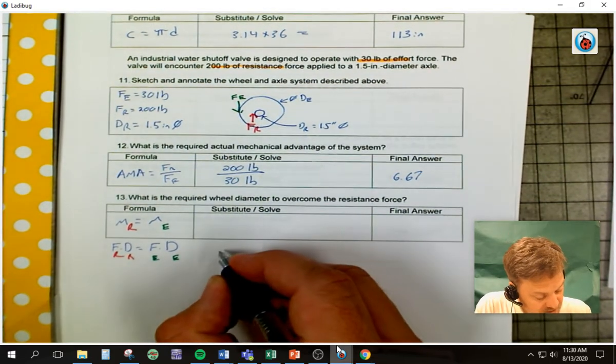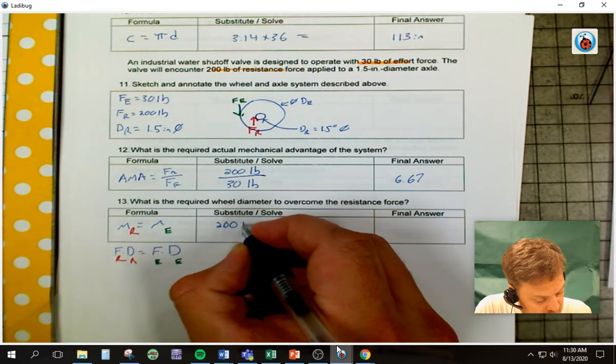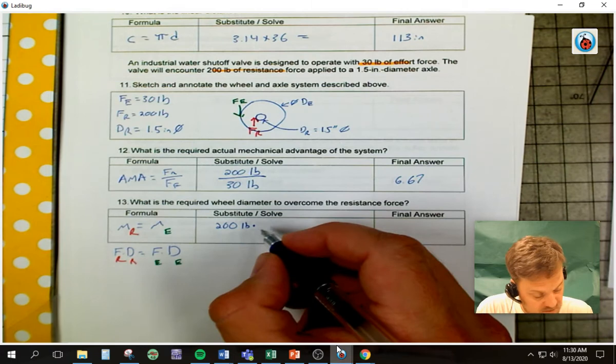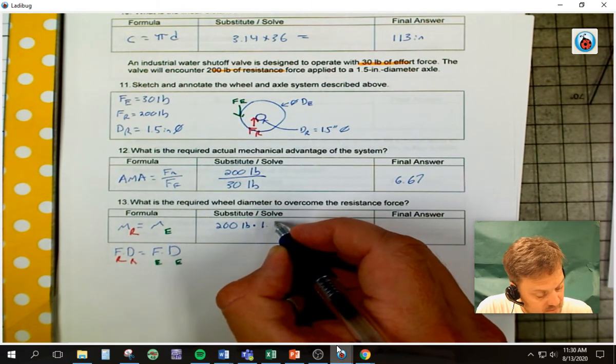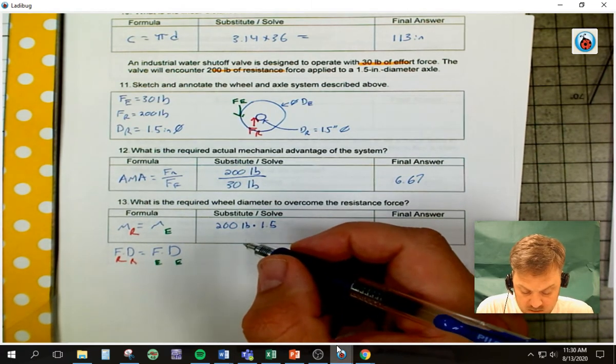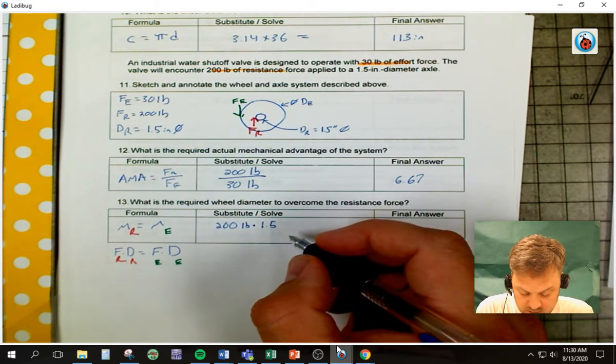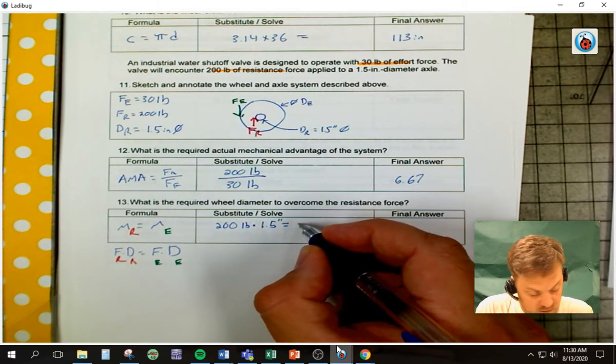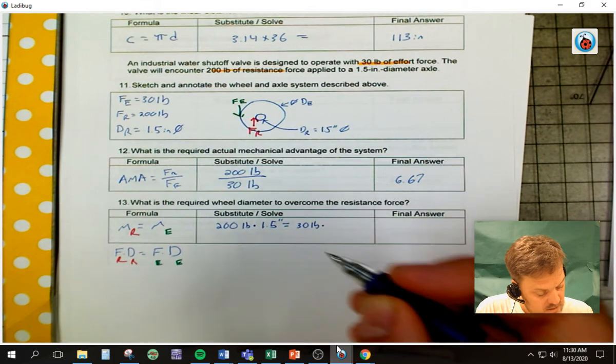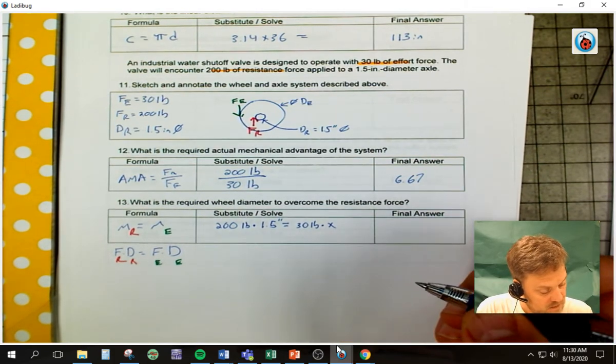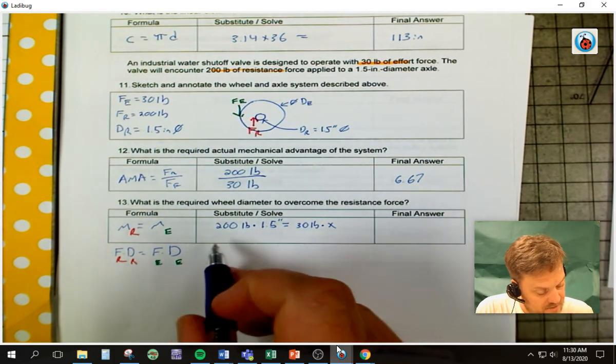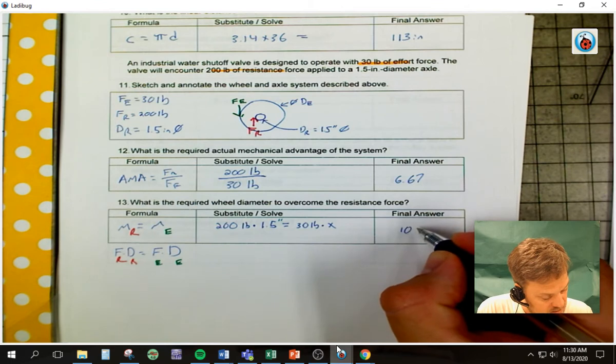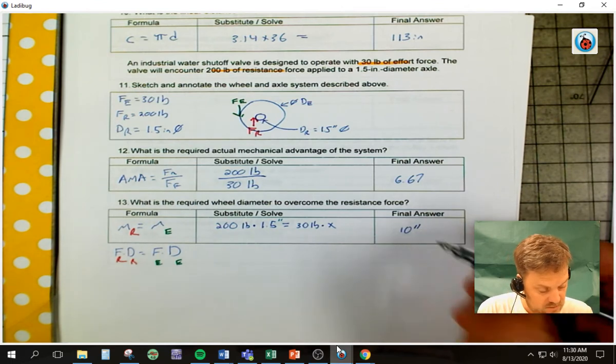And so I can say, okay, force resistance is 200 pounds times our distance resistance, right, which is 1.5 on our diameter. And then we can say that is equal to 30 pounds times times X. Okay. So if you do all of that math, the 200 times the 1.5 divided by 30, you will end up with 10 inches is what we've got. And I hope that helps.